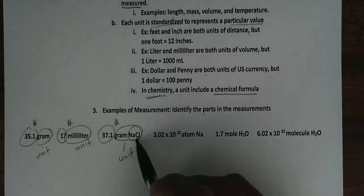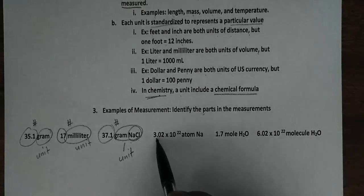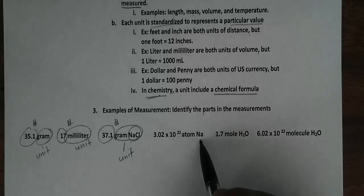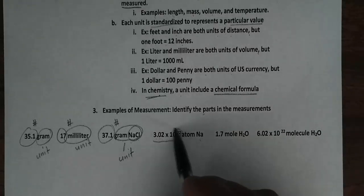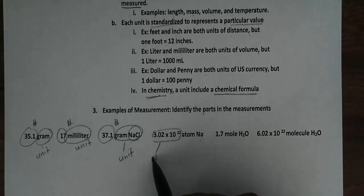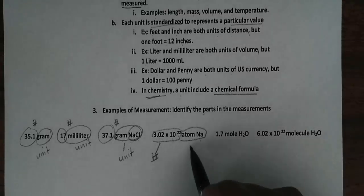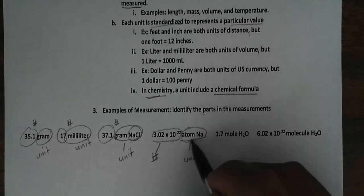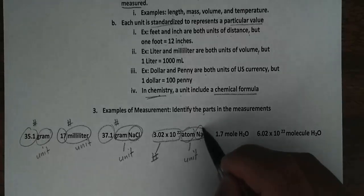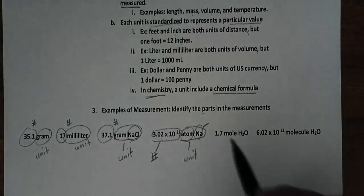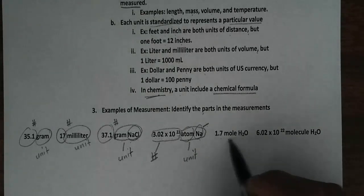Then we have 3.02 times 10 to the 22nd power, atoms of Na, which is sodium. So this whole entire thing right here, that would be a very large number, but it's still the number part of a measurement. Then atoms of NaCl, that would be the unit. Notice the term atom is a unit. And this would be part of the unit functioning as a chemical formula.